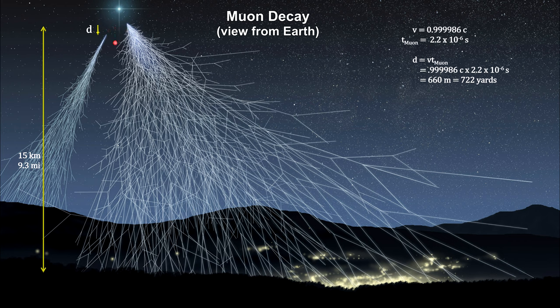That would leave few, if any, reaching the Earth's surface, 15 kilometers away. Yet we measure about 1 per square centimeter per minute. That's around 90% of the estimated muons produced in the upper atmosphere, which is way too high a percentage given the short half-life.